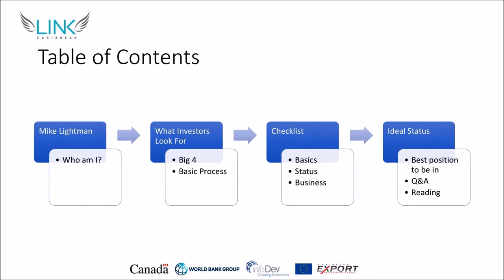So diving in, I want to jump into the table of contents — what we'll be talking about today. We really have four things: who am I, which will be very brief; a high-level look at what investors are looking for and how they assess your company; the self-assessment checklist with 11 items; and at the very end a recap, Q&A, and some suggested reading. As we go through, you'll see the question itself followed by additional details and articles you can read for each checklist item. This presentation will be shared with you afterwards so you can read everything in more depth.